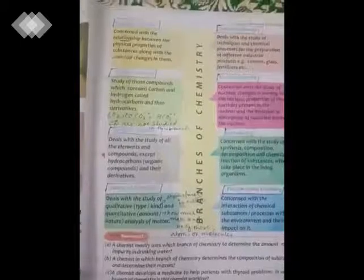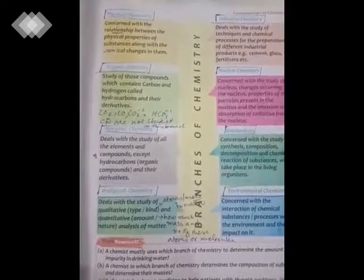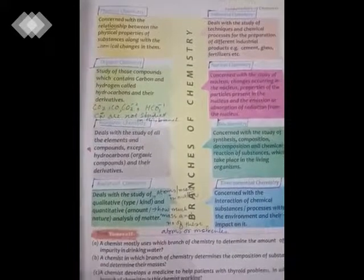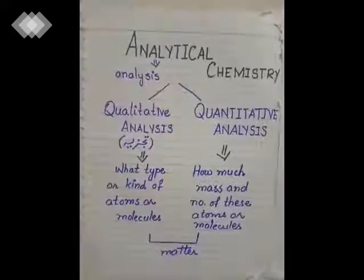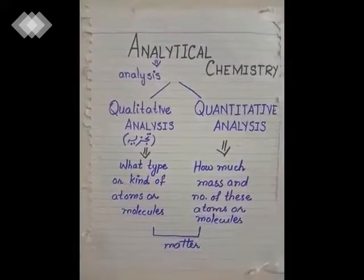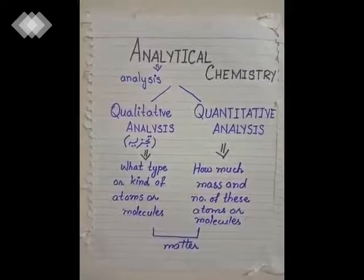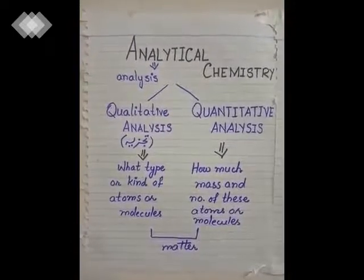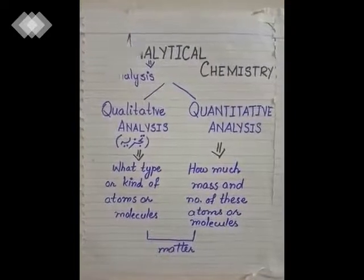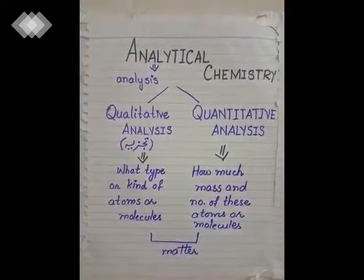The fourth branch of chemistry is analytical chemistry. Its definition: it deals with the study of qualitative and quantitative analysis of matter. The name indicates that the word 'analytical' is derived from the word 'analysis', which means detailed examination of anything.